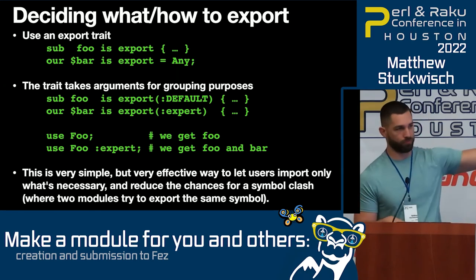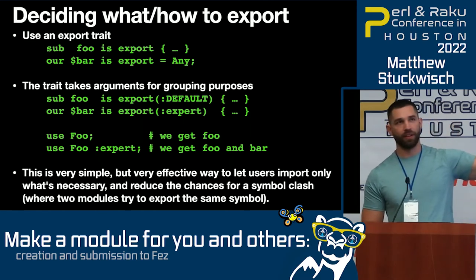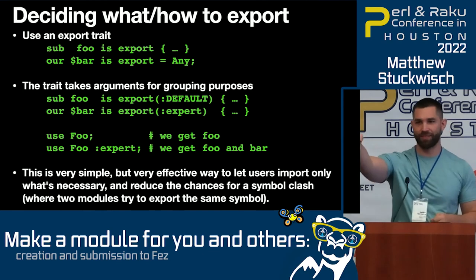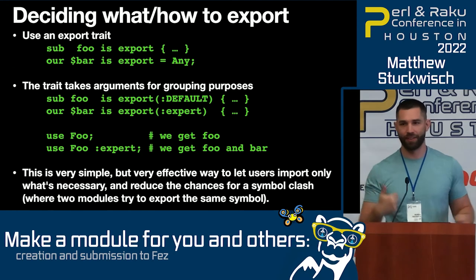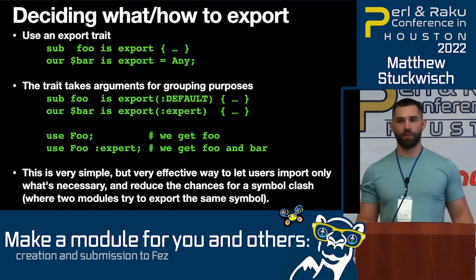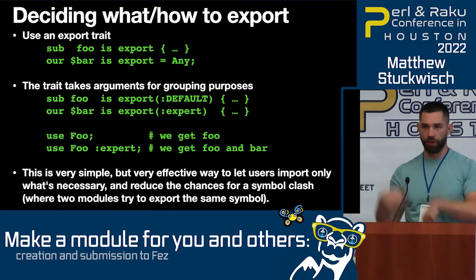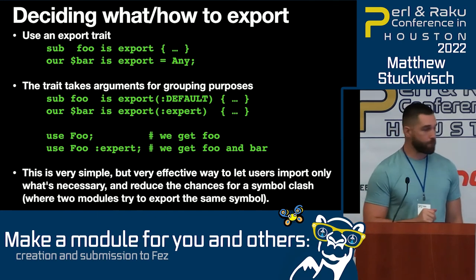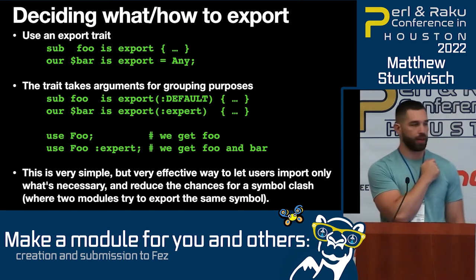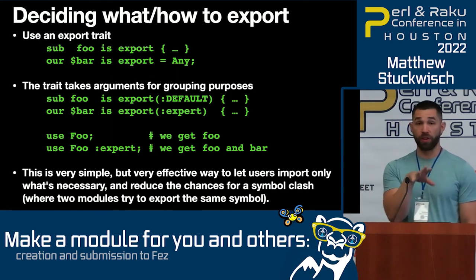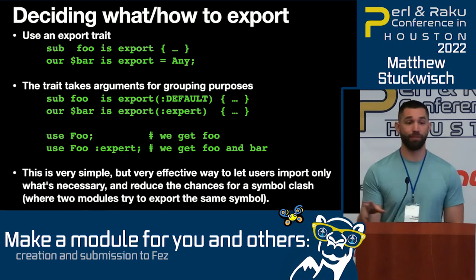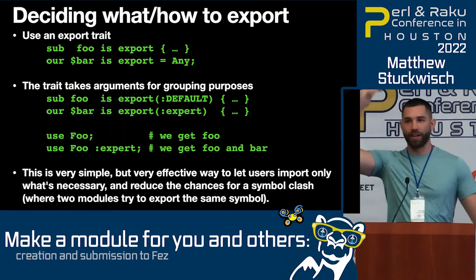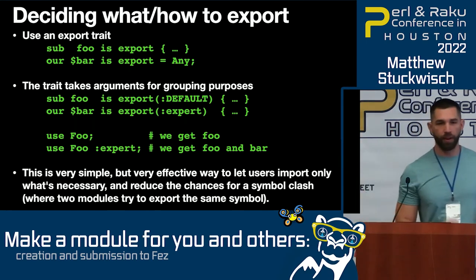This is a very simple and effective way to let people import what they want. If you're making a module, there is no way to get a symbol if you don't provide a way for somebody to get it - they cannot get it. This has come up a couple of times. If the module doesn't have a way for you to grab a subroutine, you can't get it. The other reason I like using these grouping names is that there's a very high chance that utility function modules might have names very similar to other modules. If two modules are each importing 300 symbols, you're probably going to have a clash somewhere. So give people options to limit what they're importing - it'll make everybody's life happier.